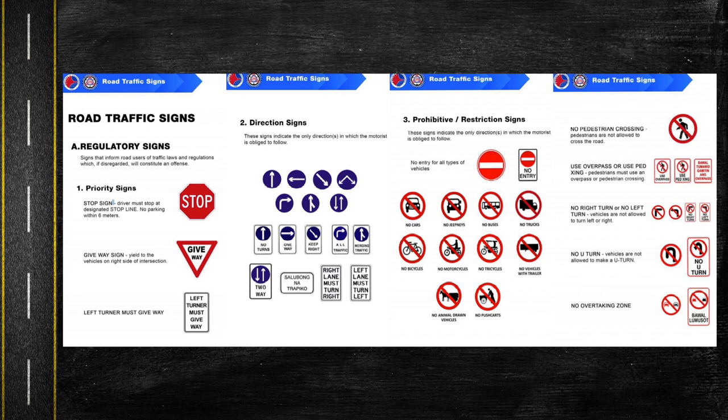For priority signs, these include the stop sign, give way sign, and left turner must give way. For direction signs, these are signs that show directions the motorist is obliged to follow. For prohibitive or restriction signs, these are signs indicating the only directions in which a motorist is obliged to follow.